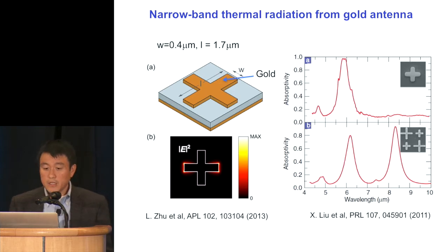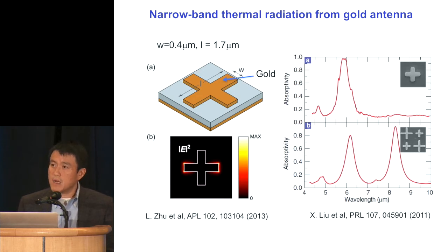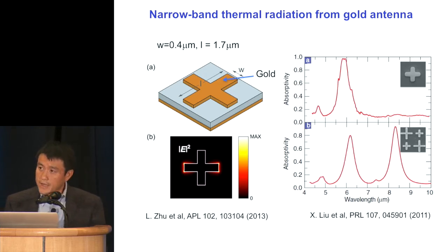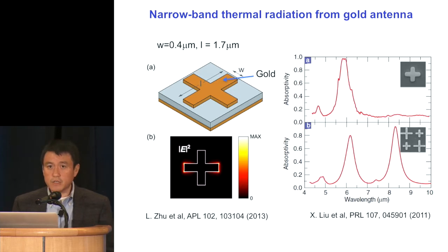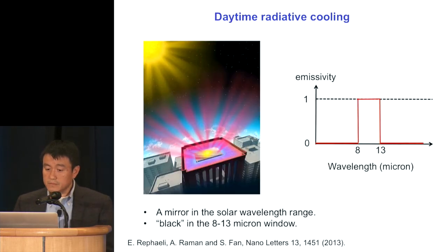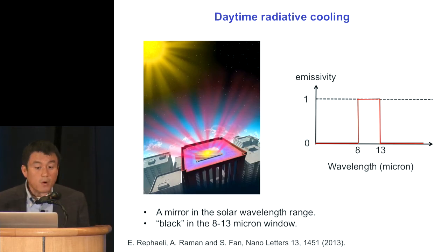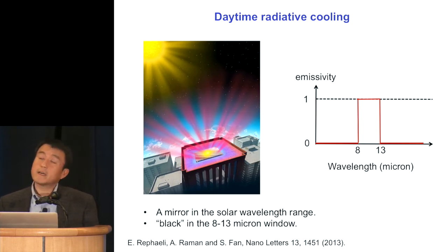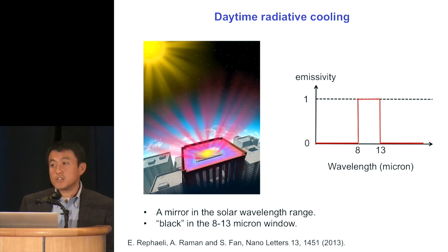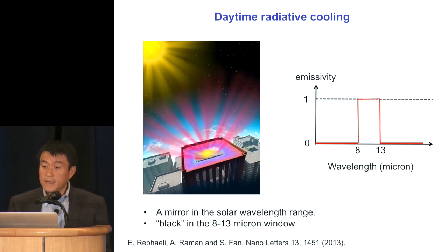The point here is that one really now has the possibility to shape thermal radiation by nanophotonic design, and in doing so, allow us to rethink many aspects of thermal radiation in an energy context. For example, the first thing I'll show is a simple example where you can tailor a thermal emissivity profile — an emitter that has near-zero emissivity everywhere except in the wavelength range of 8 to 13 microns.